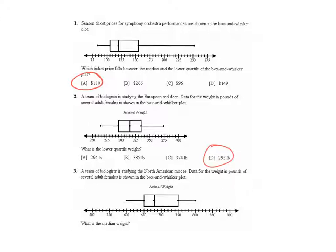Question three, a team of biologists is studying the North American moose. Data for the weight in pounds of several adult females is shown in the box and whisker plot. What is the median weight? That's this point right here. We need to figure out what we're counting by. In this case, it's not by fives. Looks like it's by 10, 650, 660, 670, 680, 690, 700. Yes, it is. So 650, 660, 670. It looks like it's going to be 680 pounds.